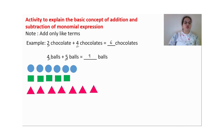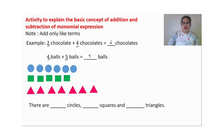Below you can see some pictures: some circles, some squares, and some triangles. How many circles are there? Counting: 1, 2, 3, 4, 5, 6 — there are 6 circles.